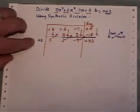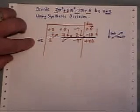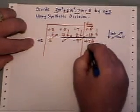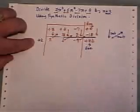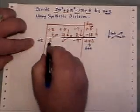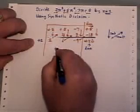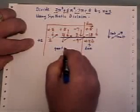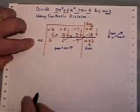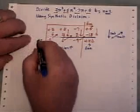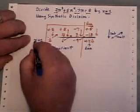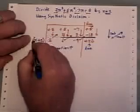What you get with synthetic division once you are finished is this is the remainder that you get to your question and in here you get your quotient.